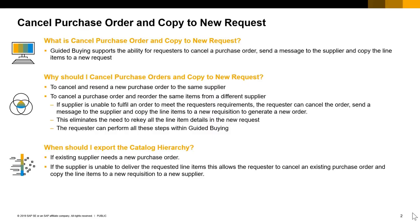Guided Buying supports the ability for requesters to cancel a purchase order, send a message to the supplier, and copy the line items to a new request. This improves the user experience, as previously when Guided Buying users canceled requests or purchase orders, they punched into the SAP Ariba buying and invoicing solution to perform the cancel operation. Users prefer to complete these steps without leaving Guided Buying. To cancel and resend a new purchase order to the same supplier, or to send the same line items on a purchase order to a new supplier, you can use this new feature.